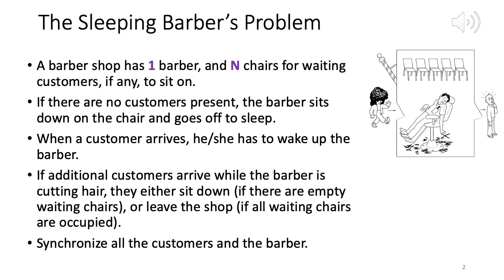The barber is sleeping when there are no customers; when the first customer arrives they wake the barber up. Subsequent customers that arrive while the barber is cutting hair sit in the waiting chairs. Many scenarios can happen: no customer means barber is sleeping, one customer means barber is cutting their hair, and multiple customers means some are waiting. It's a dynamic thing — maybe 10 customers come at once, maybe 20 but only 10 can be accommodated.